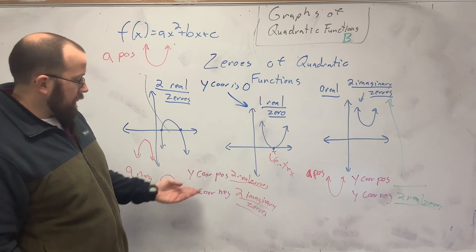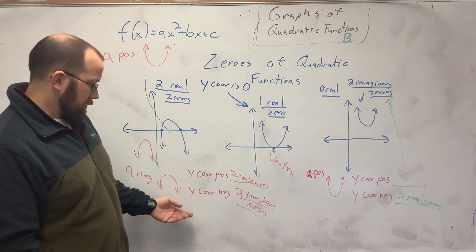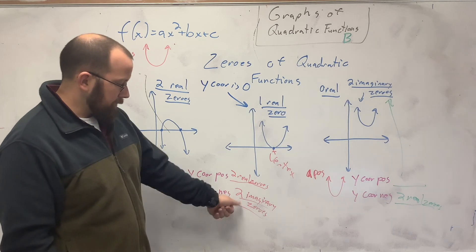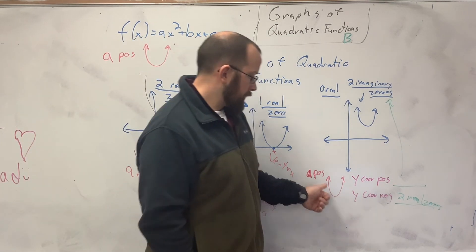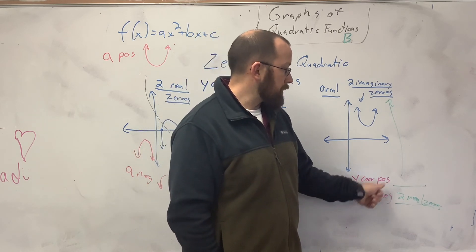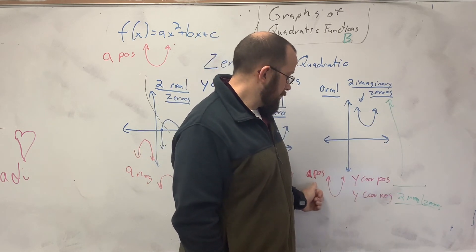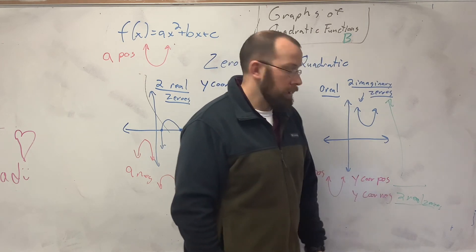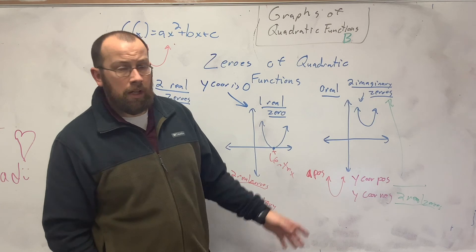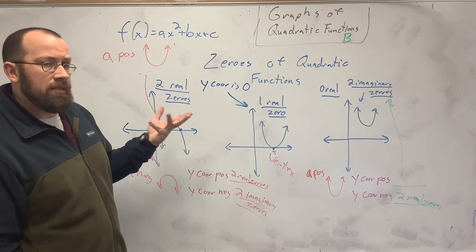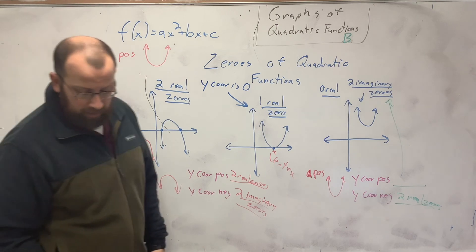So, frowny face, y-coordinate positive, two real zeros. Or if your A is negative, y-coordinate negative, two imaginary zeros. If your leading coefficient is positive, you get a smiley face. If the y-coordinate is positive, you have two imaginary zeros. If your A is positive, smiley face, and your y-coordinate is negative, two real zeros. That's something you need to write down and just be able to remember. If you can't remember, just think about it. And it makes sense if you think about it enough.